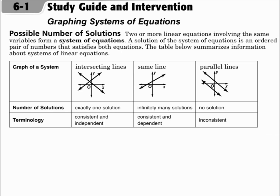As you see in the table, when you have a system of linear equations, it's two lines, and those lines could do one of three things. They could either intersect, be the same line overlapping itself, or be parallel lines. If they intersect, there's exactly one solution, and that solution is at the point of intersection. That's called consistent and independent.